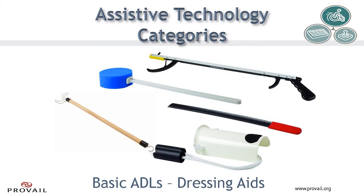These are some basic, commonly used dressing aids. We have a reacher at the top that can be used for grasping and reaching many things, including pulling your pants up or just grabbing your clothing items from the closet. Next, we have a long-handle sponge to make it easier to reach all parts of your body when bathing. The item with the red handle is a long-handle shoe horn to assist with getting your shoes on. This next item is called a sock aid — you slip the sock over the outside and it helps you slip your socks on easier. And the last item is a dressing stick, which allows you to hook onto your clothing and pull them where you need to get to in order to dress yourself more independently.